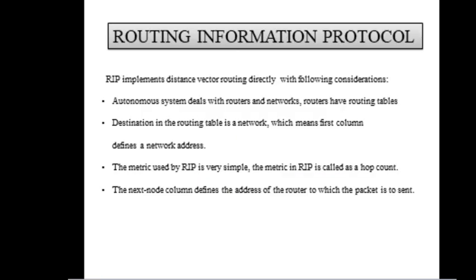The Routing Information Protocol implements distance vector routing directly with the following considerations. An autonomous system deals with routers and networks, and routers have routing tables. The destination in the routing table is a network, meaning the first column defines a network address. The metric used by RIP is very simple — it is called hop count. The next-node column defines the address of the router to which the packet is to be sent.